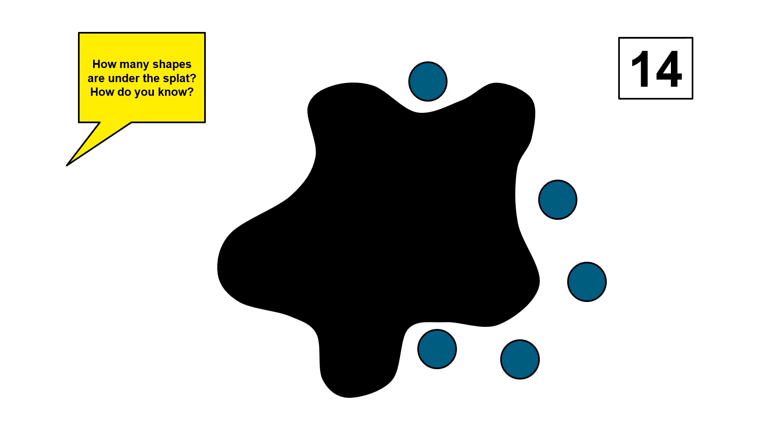How many blue shapes are under the splat? How do you know?